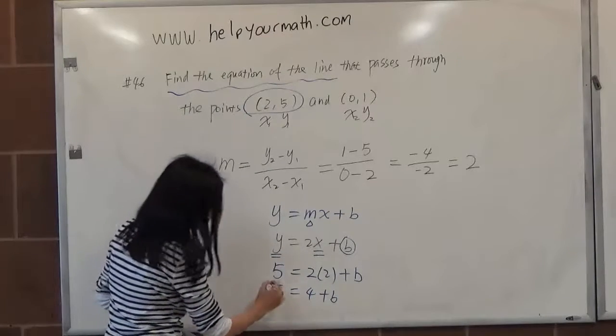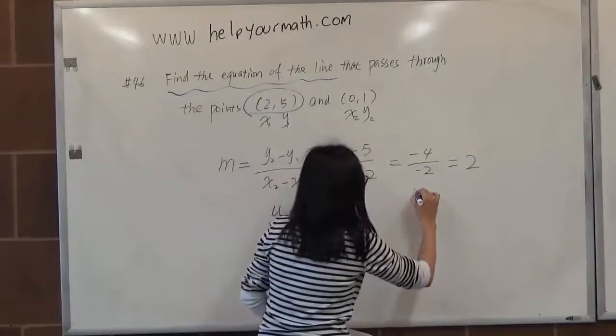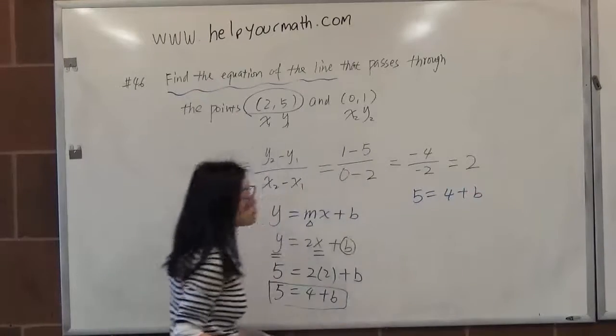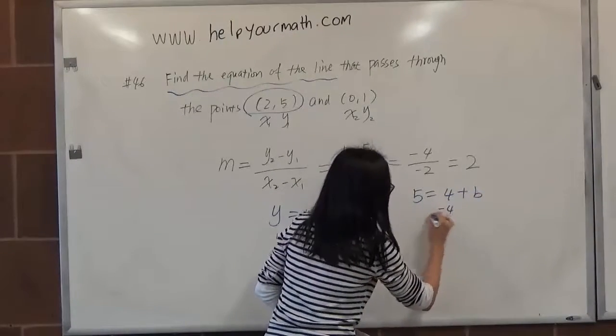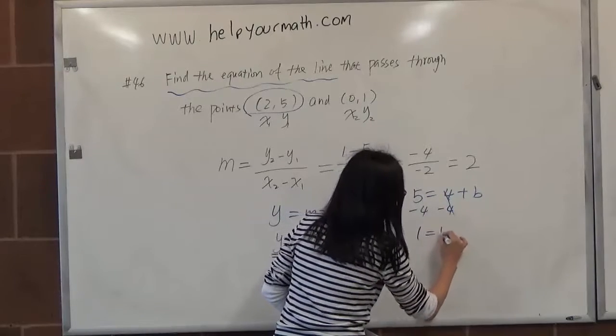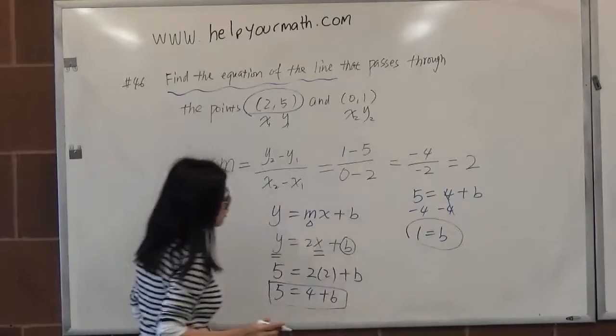So here, from this equation, we can solve for b. Let me write it over here. 5 equals 4 plus b. How do we solve for b here? Minus 4, minus 4. So this cancels out. So we have 1 equals b. So we got our y-intercept.